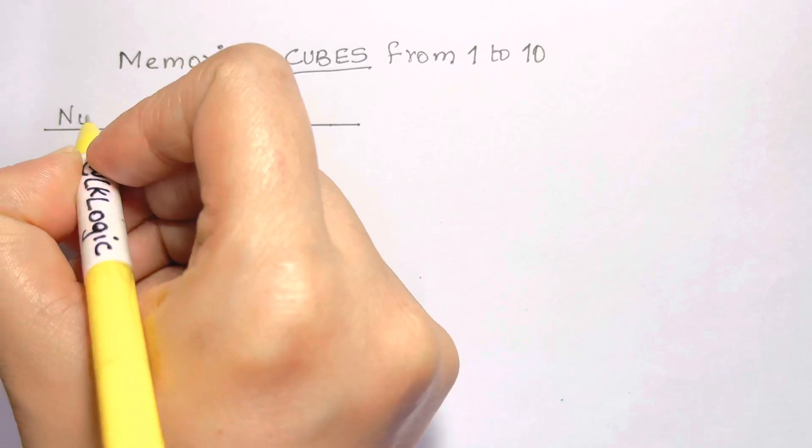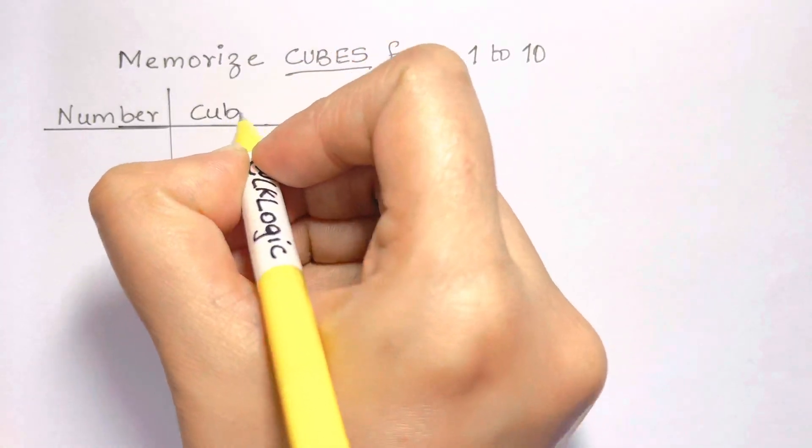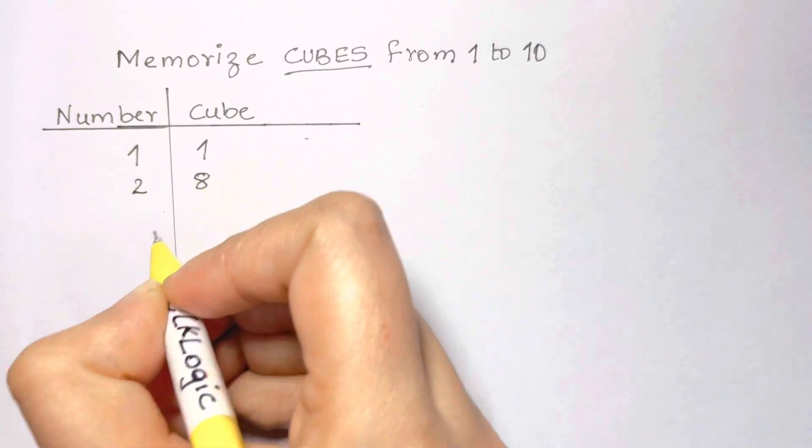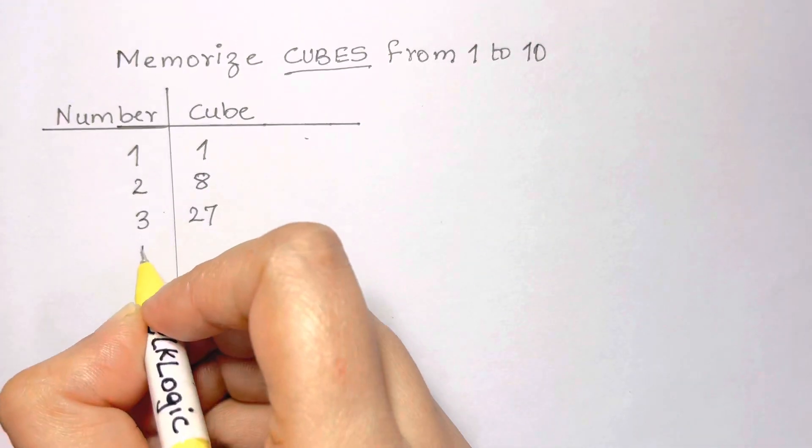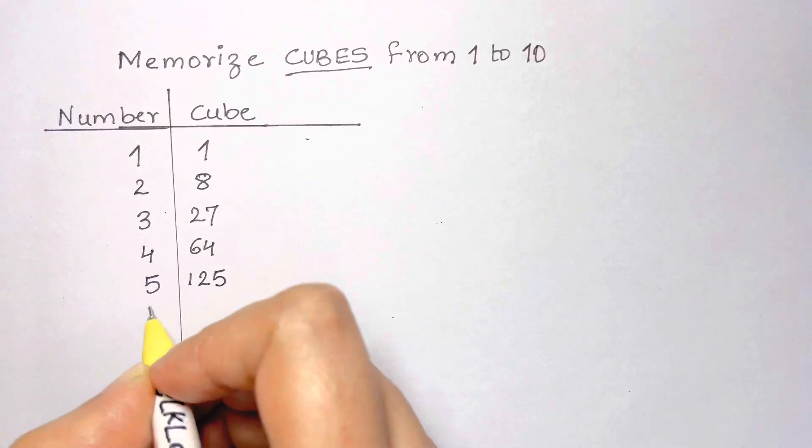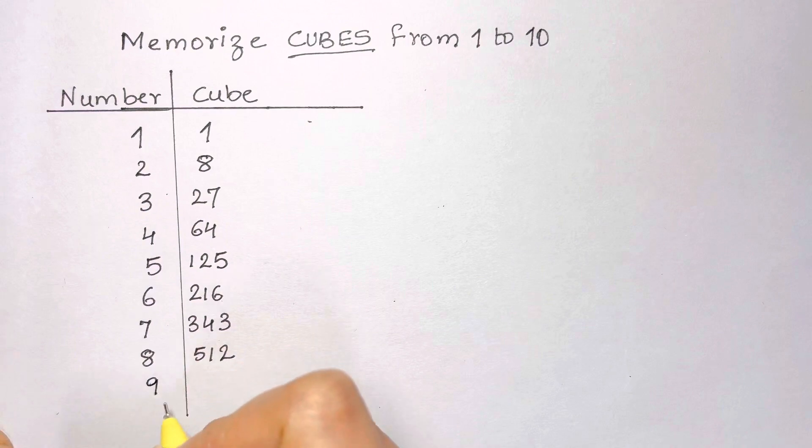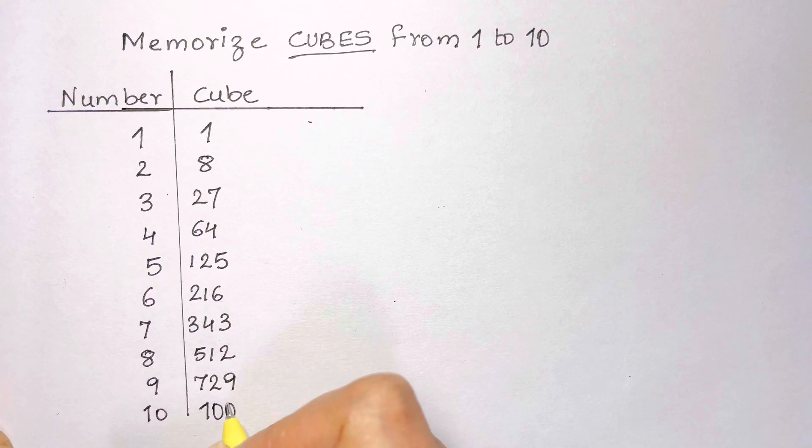The cube of a number is a number multiplied by itself three times. So the cube of 1 is 1, 2 is 8, 3 is 27, and I'm going to keep writing the cube of each number. You may know some of these, otherwise to do this trick you have to memorize these 10 numbers.